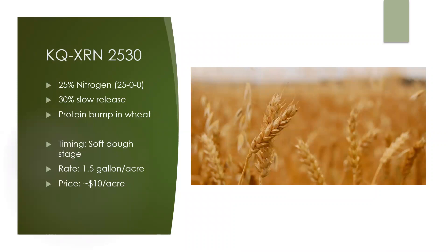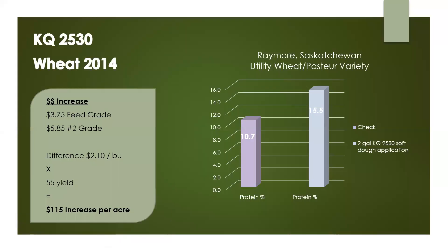XRN 2530 is a product used for a protein bump in wheat. Similar to the base XRN, it is a straight nitrogen product with an analysis of 25-0-0, but it is only 30% slow release nitrogen. The high amount of quick release nitrogen is what stresses the plant, resulting in the protein increase. You apply it at the soft dough stage of the wheat at 1.5 gallons per acre, and the cost is around $10 an acre. Here's a trial done in Raymore, Saskatchewan that applied XRN 2530 at soft dough at 2 gallons an acre. The result was a protein bump over 4%, allowing them to get number 2 grade versus feed grade, resulting in an extra $2.10 a bushel. A protein bump over 4% is high — we would typically see a 1–2% increase.